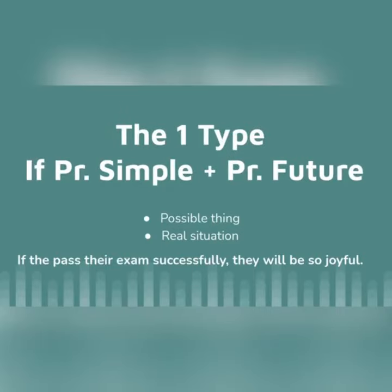Then I would like to tell you about the first conditional. It is used to talk about things which might happen in the future. Of course we can't know what will happen in the future, but this type describes possible things which could easily come true. The first conditional has the present simple after 'if,' then the future simple in the other clause. To sum up, the first conditional describes a particular situation, whereas the zero conditional describes what happens in general.